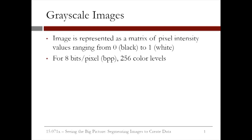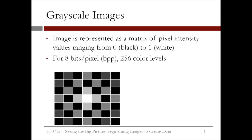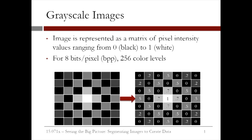Let us try to understand the format of the data handed to us in the CSV files. Grayscale images are represented as a matrix of pixel intensity values that range from 0 to 1. The intensity value 0 corresponds to the absence of color, or black, and the value 1 corresponds to white. For 8 bits per pixel images, we have 256 color levels ranging from 0 to 1. If we have a grayscale image, the pixel information can be translated to a matrix of values between 0 and 1 — and it is exactly this matrix that we are given in our datasets.